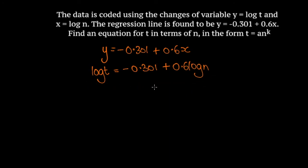Now we're left with an equation in terms of logs. In order to get rid of the logs, we're going to have to raise 10 to the power of both sides. Because when log is written like this, the implied base is base 10. So both of these are log base 10. We're going to raise 10 to the power of both sides. So 10 to the log t and 10 to the minus 0.301 plus 0.6 log n. On the left hand side, the 10 and the log will cancel. They're inverse functions. So t is equal to...